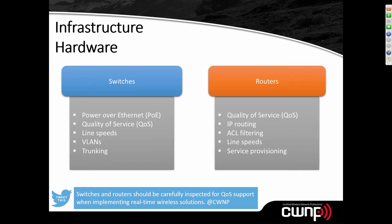For routers, ensure Layer 3 QoS is implemented appropriately, with proper IP routing, access control list filtering, and line speeds of 1 Gbps or greater. Routers may also provide DHCP to clients or at minimum DHCP forwarding and relay. Switches and routers should be carefully inspected for QoS support when implementing real-time wireless solutions — you can implement QoS on the AP and the client, but that only covers the wireless link. The switches and routers end-to-end must also be configured to support quality of service.